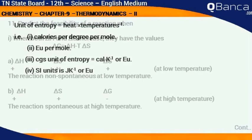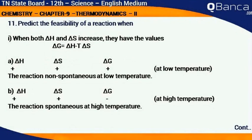Predict the feasibility of a reaction when both ΔH and ΔS increase. They have the values ΔG equals ΔH minus T ΔS. When ΔH is positive and ΔS is positive, ΔG is positive at low temperature, so the reaction is non-spontaneous at low temperature.